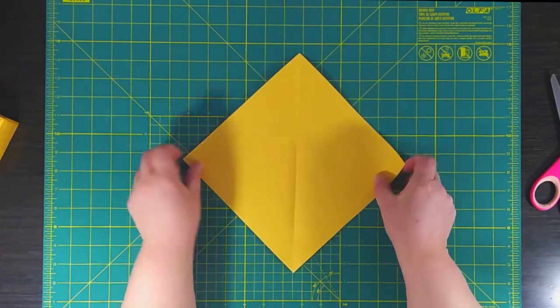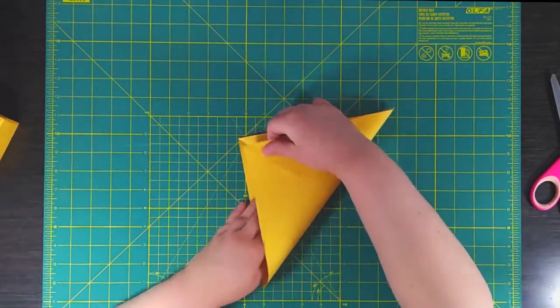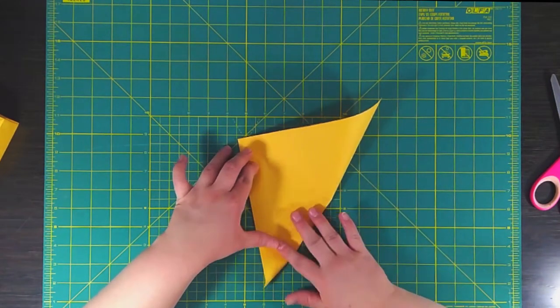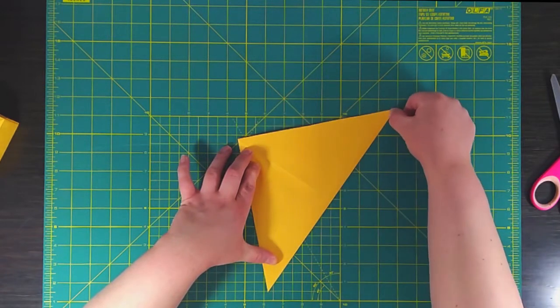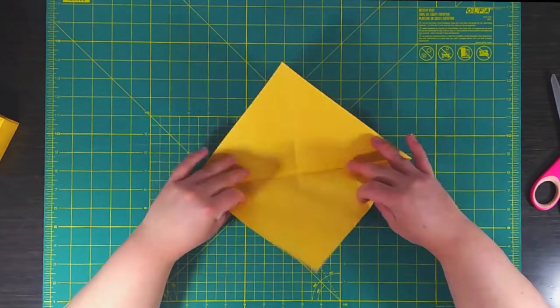So now we want to make a second fold going across. So fold the other corner in. Make that fold nice and sharp. So now your paper should look like this.